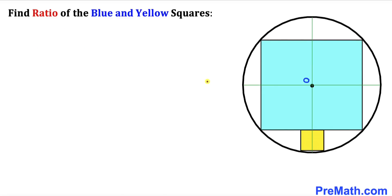Let's focus on the blue square first. Let me go ahead and label its sides. I'm going to call each side lowercase a. Since all sides are of equal length, every side of the blue square is a.